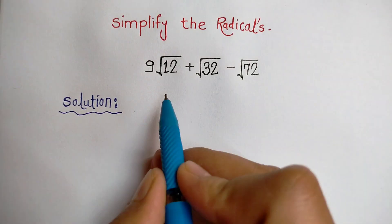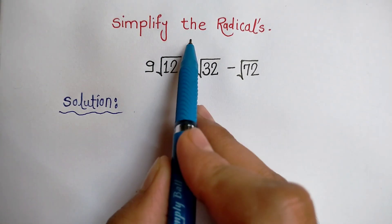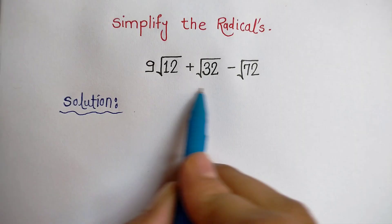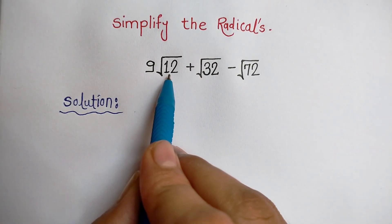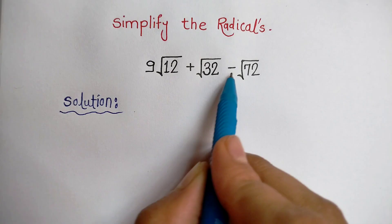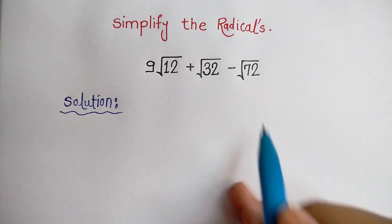Hello everyone, in this video we have to simplify this radical or square root expression. The question is 9√12 + √32 - √72.